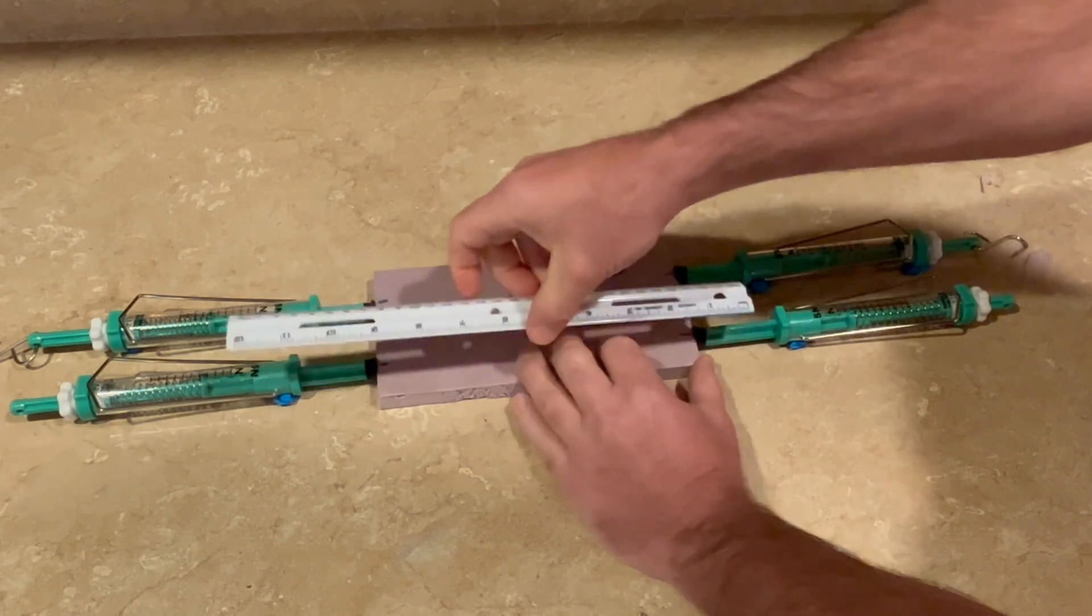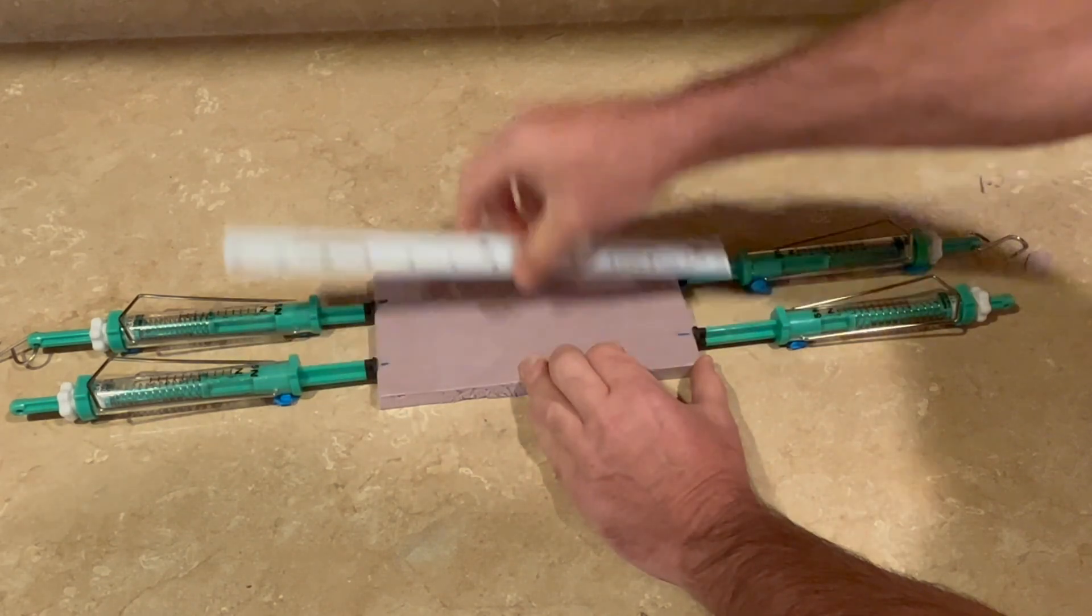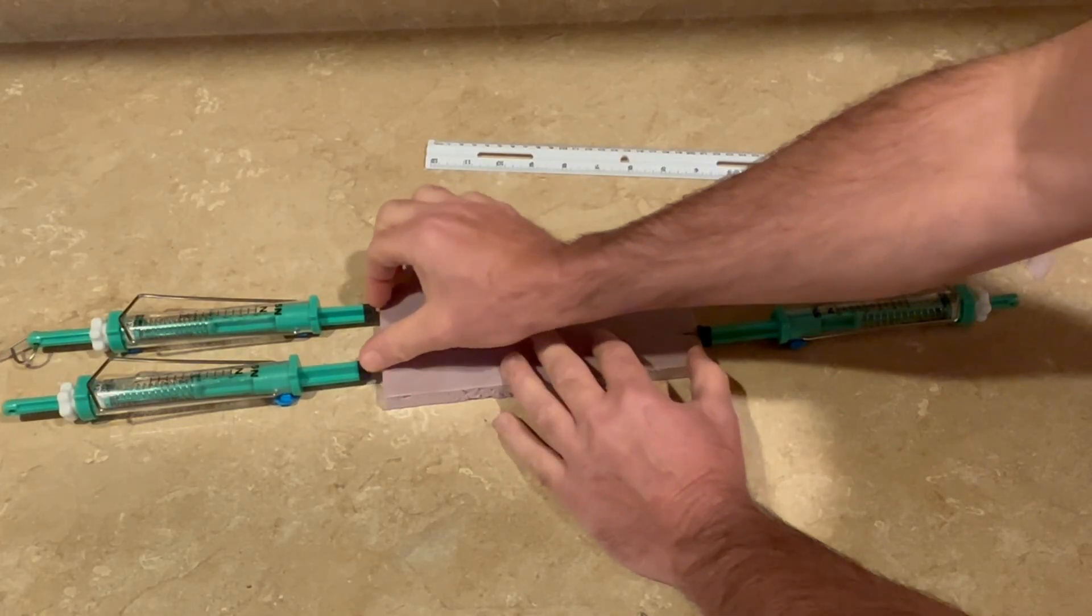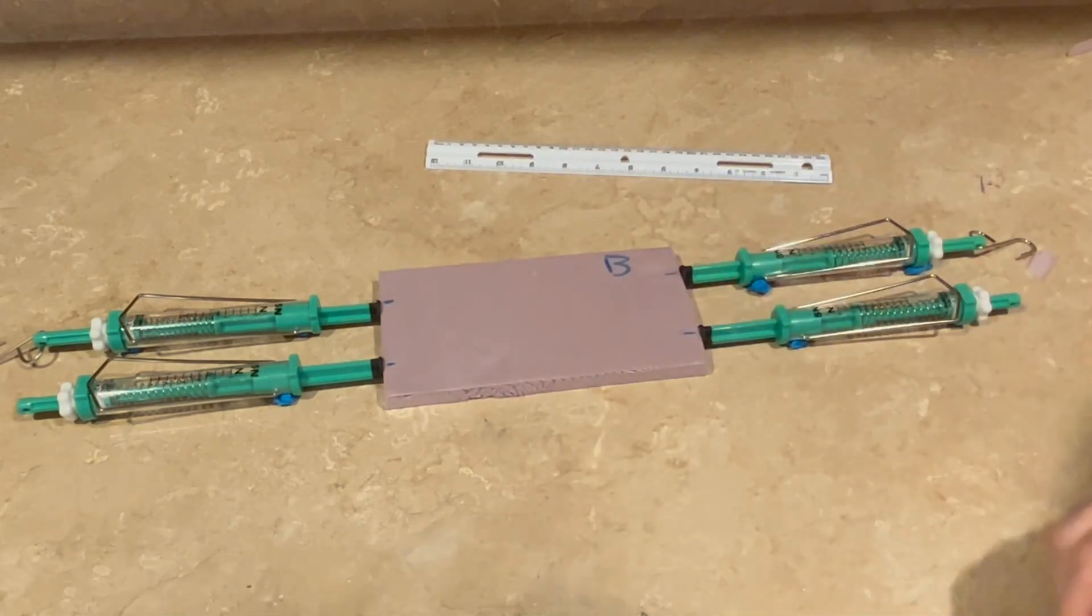Each spring scale should be parallel to the corresponding spring scale across from it. Shake the foam a little and pull away the spring scales from the foam and release them. Then line this one up against the back on either side B.